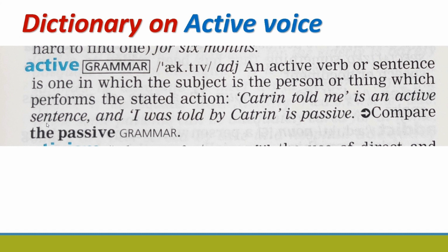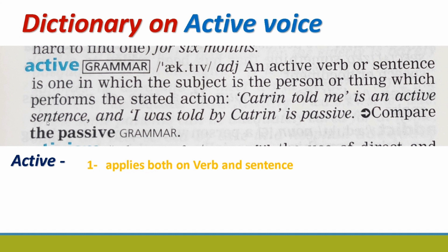An active verb or sentence is one in which the subject is the person or thing which performs the stated action. So according to this definition, the first rule is that it applies both on verb and sentence — meaning a verb can be in active voice and a sentence can also be in active voice.